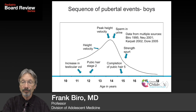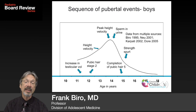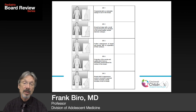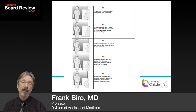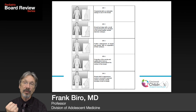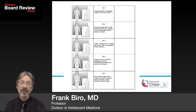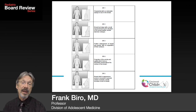The initial event in puberty in boys is an increase in testicular volume, occurring at the same time as the pubertal growth spurt. Six to twelve months later, pubic hair appears. About one and a half to two years after that is the peak height velocity. Six to twelve months after peak height velocity, sperm appears in urine and nocturnal emissions occur. About a year later, boys experience a strength spurt, around the same time as attainment of pubic hair stage 5.